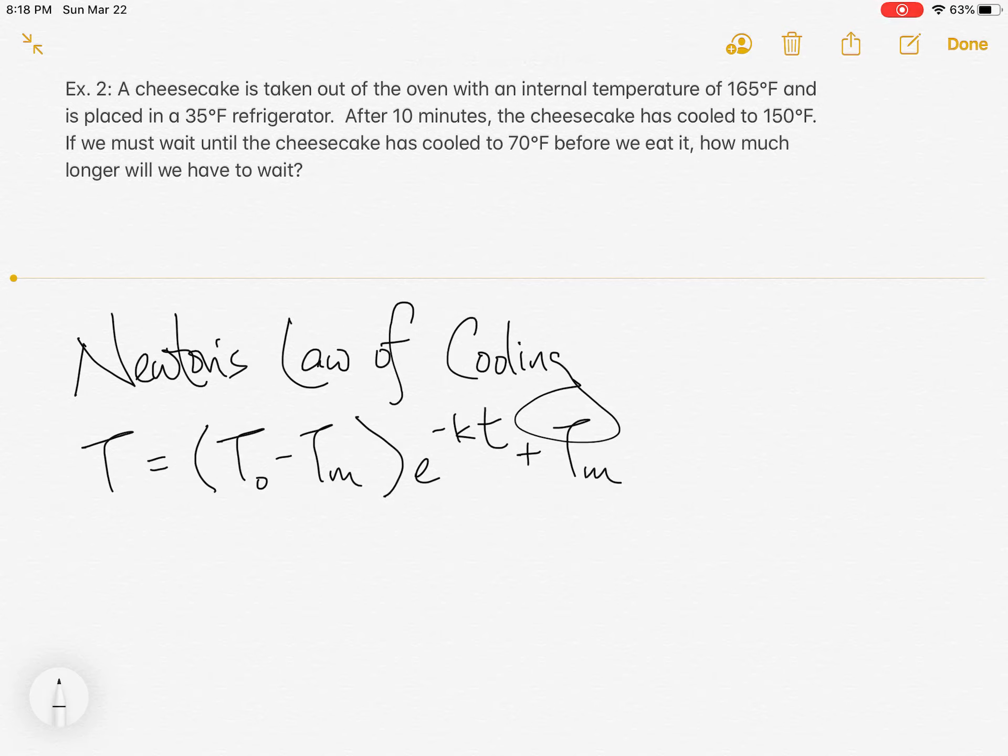All right, lots of T's here, but we'll talk about what they all mean. So T sub 0 stands for the initial temperature, while T sub m stands for the temp of the medium. And by medium, I mean the surrounding temperature, which in this case is the refrigerator.